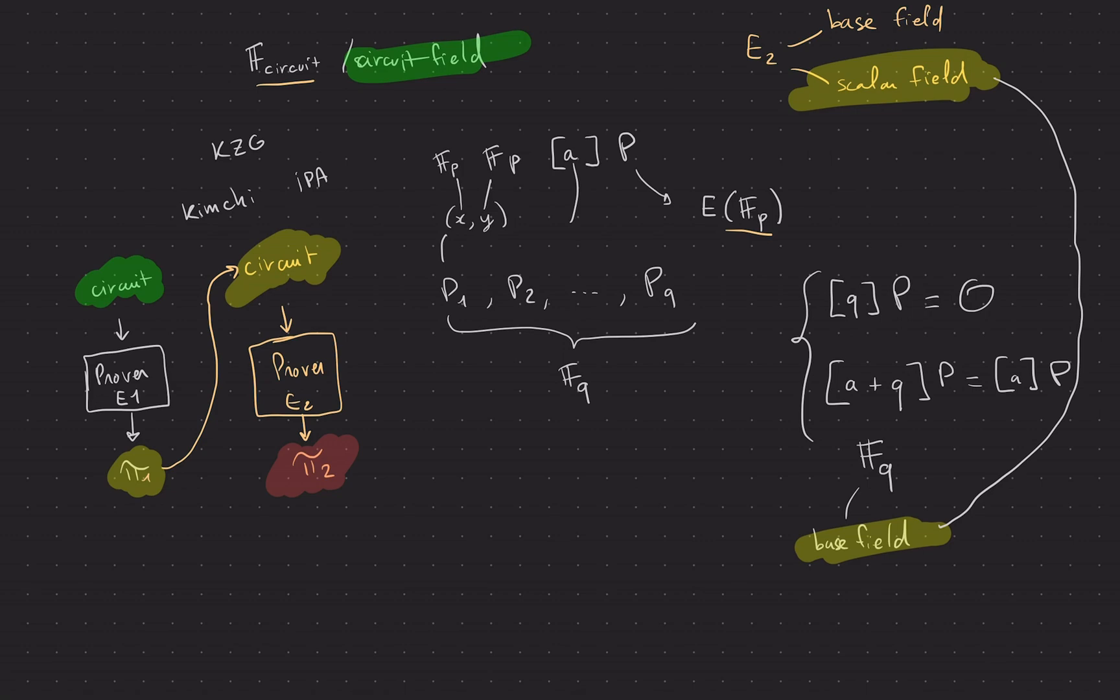And so now we have some sort of similar problem, except that we're yet in another field. And so we have to yet find another elliptic curve for that. So we have one level of recursion. So there's actually a very simple way to solve that. And the solution is that we find a curve E2